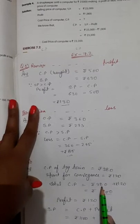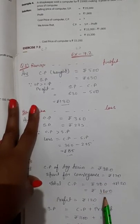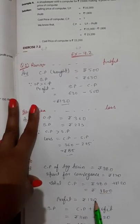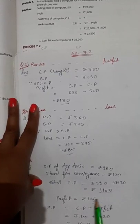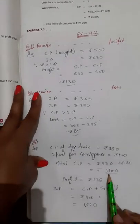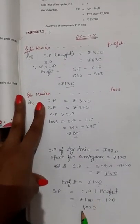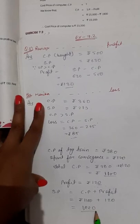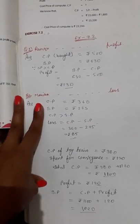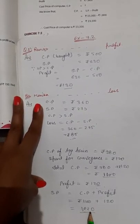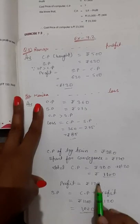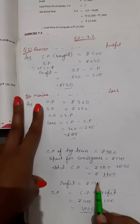He also wants a profit of 120 rupees. So you add this profit amount to the total cost price. Then you get 1220. If the toy train is sold for 1220 rupees, he will definitely get a profit of 120 rupees.